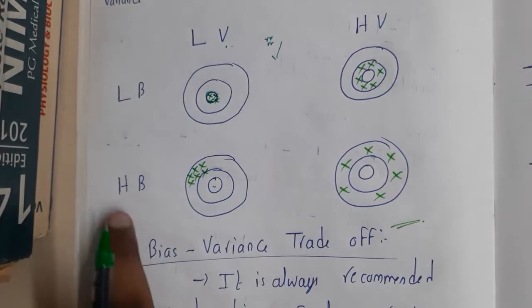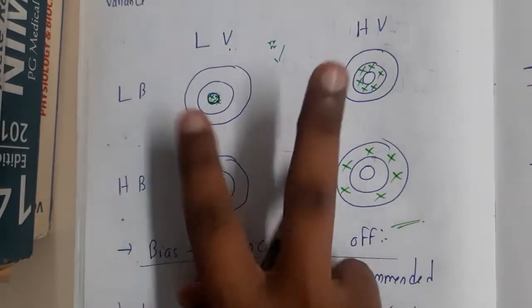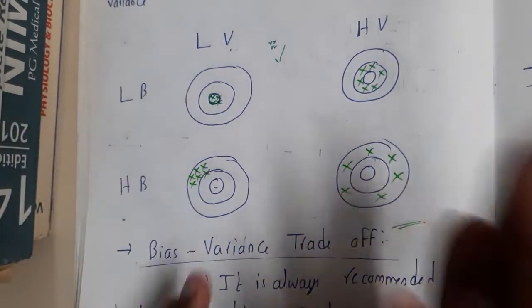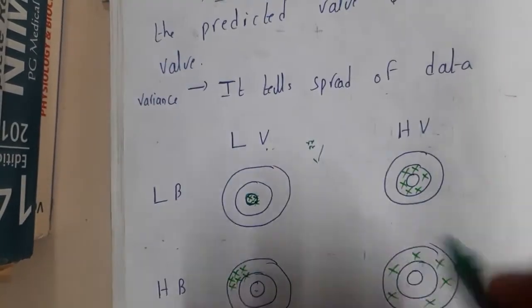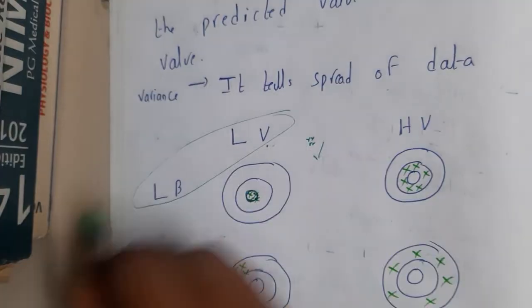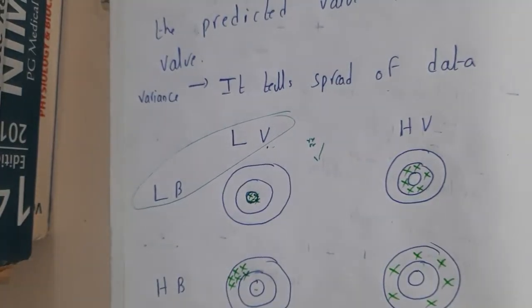If both bias and variance are high, your values will be too far from the bullseye. Basically, the ideal thing we need is low variance and low bias.